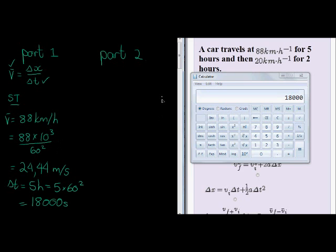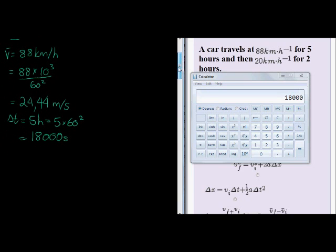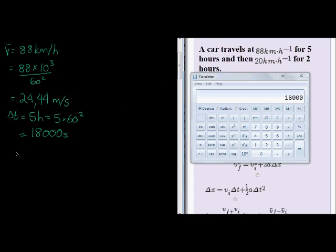Cool, and with that in mind we can just go substitute. So we substitute, velocity is therefore 24.44 is equal to the change in displacement over time. And now simply solve for x, so we're going to multiply both sides with this 18,000 to get rid of the denominator of 18,000.